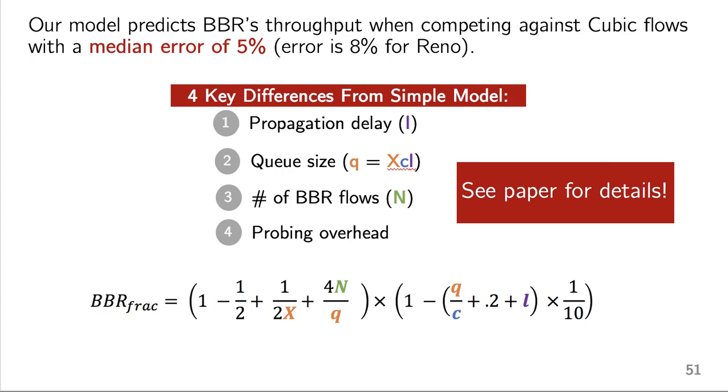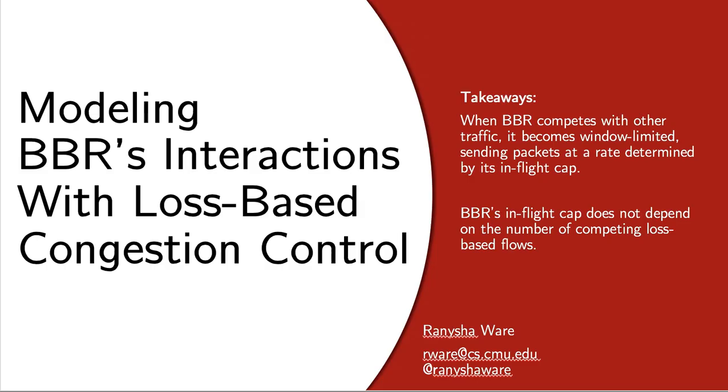So lastly, our model predicts BBR's throughput pretty well when it's competing against cubic flows with a median area of 5% and the error for Reno is about 8%. So please see our paper for all of the details about the more robust model and errors and everything. But what I want you to take away from this talk is that when BBR competes with other traffic, it's basically window limited and because of this in-flight cap and that the in-flight cap, which determines its rate, does not depend on the number of competing loss-based flows. Thank you. And please go read our paper, which is linked in the description.